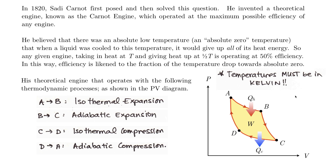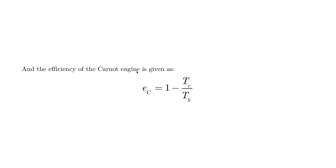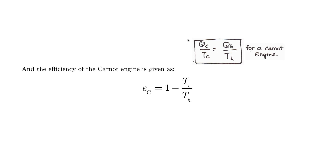Whenever we work with problems involving the Carnot engine or PV diagrams with the Carnot cycle, we must use temperatures in Kelvin. The efficiency of a Carnot engine is given by a formula — the derivation is not really important — but the temperatures must be measured in Kelvin. Also for a Carnot engine, we have a relationship between the heat shed over the temperature of the cold reservoir and the heat taken in over the temperature of the hot reservoir, and we must use Kelvin for these as well.